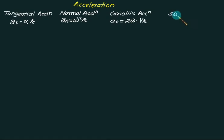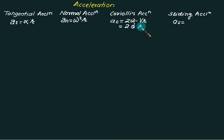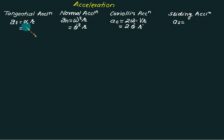Then we have sliding acceleration, which applies in the case of a slider. Omega is sometimes written as theta-dot and radial velocity as r-dot. Normal acceleration An is written as theta-dot squared times r. Alpha is written as theta-double-dot times r. Sliding acceleration is simply given by r-double-dot.